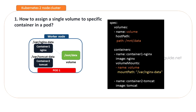Now we will look at different scenarios. In the first scenario, how to assign a single volume to a specific container in a pod. In a pod, there will be multiple containers. In that case, there will be a dedicated single volume assigned to a specific container.